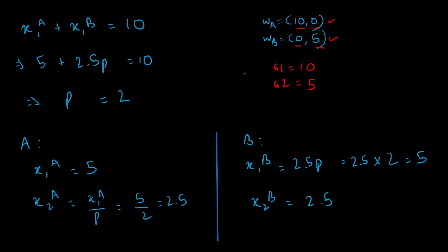The market-clearing condition for good one requires that x1a + x1b = 10. We found x1a = 5 and x1b = 2.5p, so: 5 + 2.5p = 10, which gives 2.5p = 5 and therefore p = 2. This is our equilibrium price ratio.